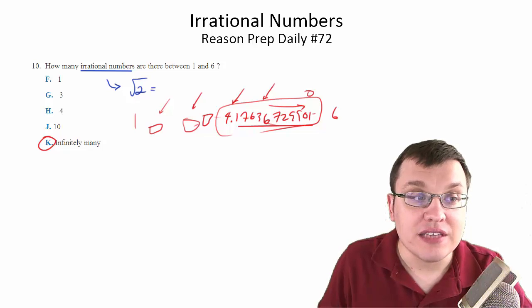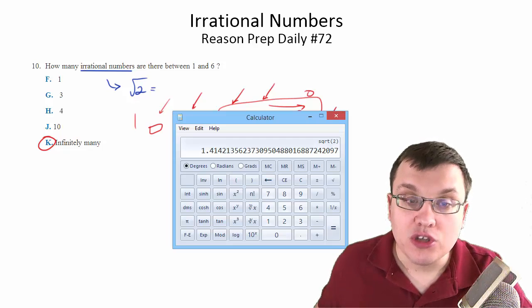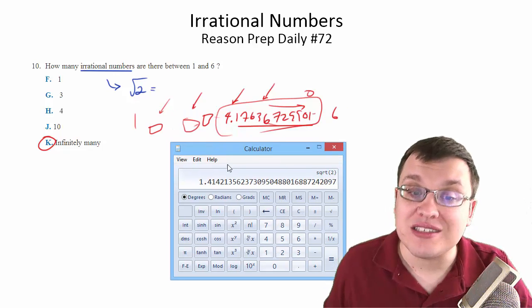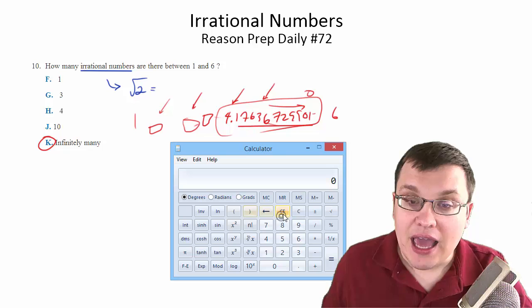One other way to look at this is to actually use square roots. So the square root of 2 would work as a possible irrational number here because the answer is between 1 and 6. And we can keep going, right?